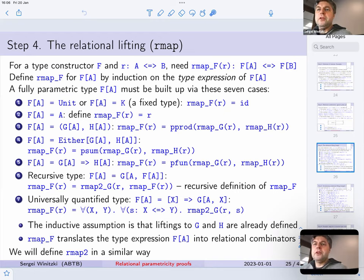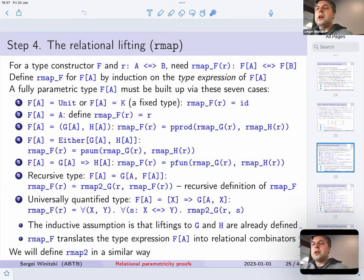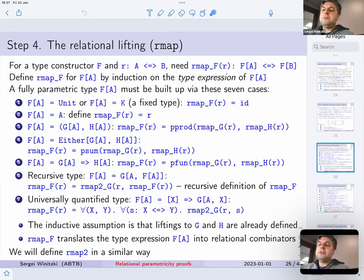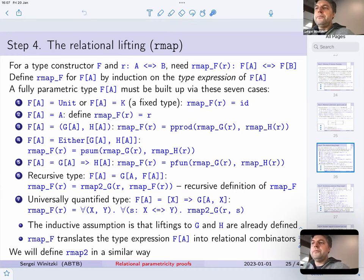Relational parametricity proofs in this tutorial are based on the construction of relational lifting, which tells us how, for any given type constructor f and for any relation r between values of types a and b, we construct a new relation — rmap f of r — which is a relation between values of types f of a and f of b.